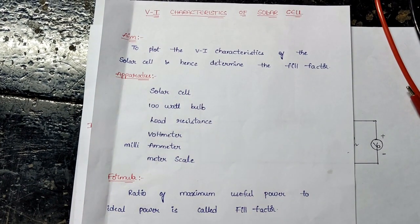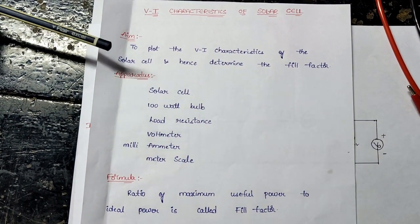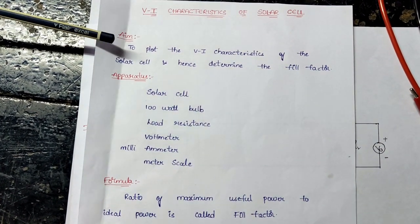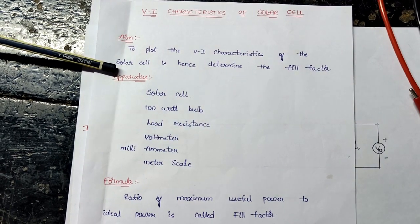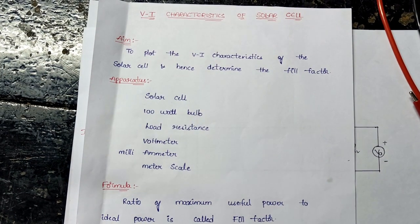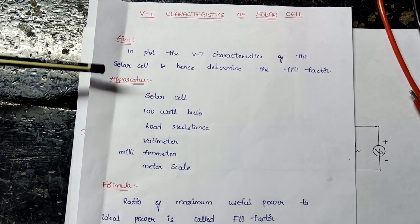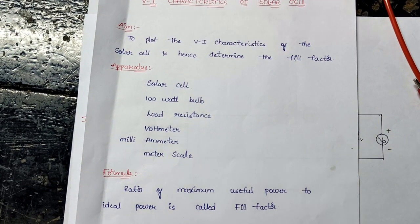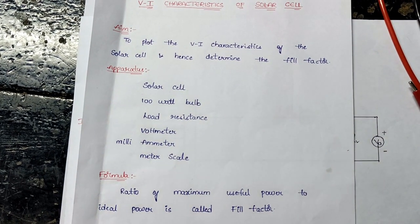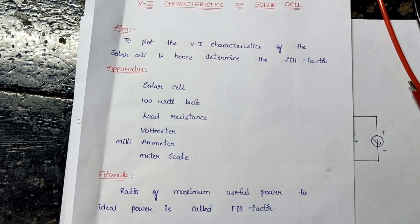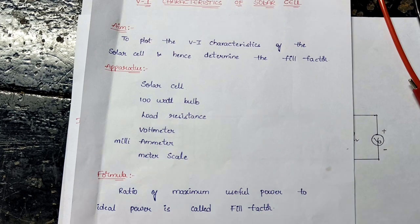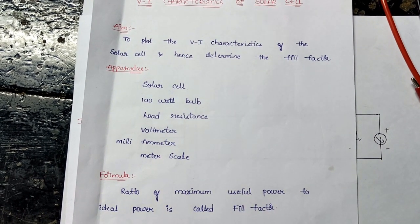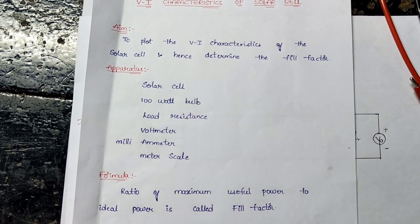The aim of today's experiment is to plot the voltage-current characteristics of a solar cell and to determine its fill factor. You know that a solar cell is a device which converts light energy to electrical energy. In this experiment, we are going to see its voltage-current characteristics.